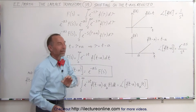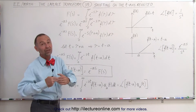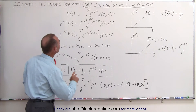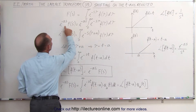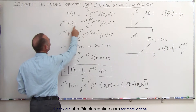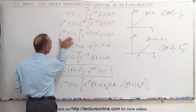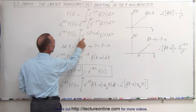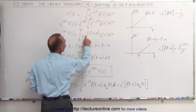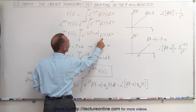Notice I used a replacement variable — instead of writing t I wrote tau, but it still represents time. What we're going to do now is multiply both sides of the equation by the term e to the minus as, and so we can then say that the left side equals the right side when we move this inside the integral sign. This becomes e to the minus s times tau plus a, times f of tau, dt.